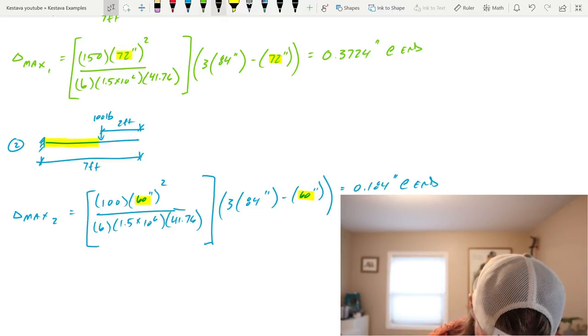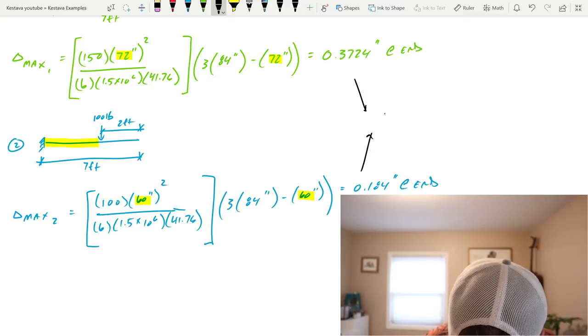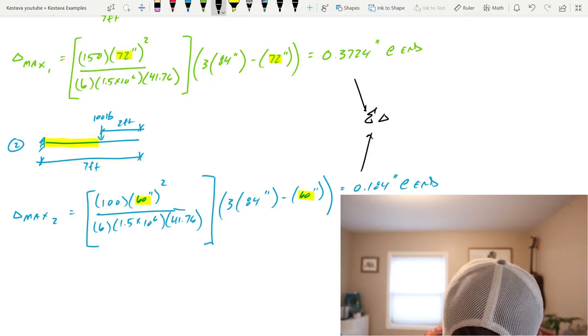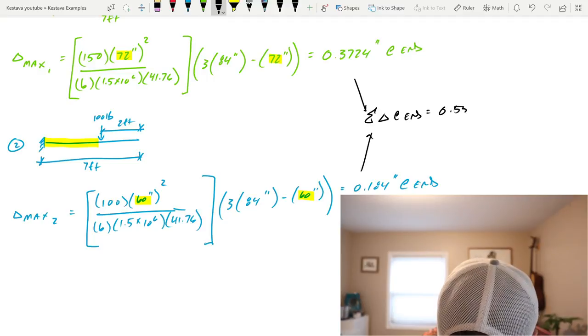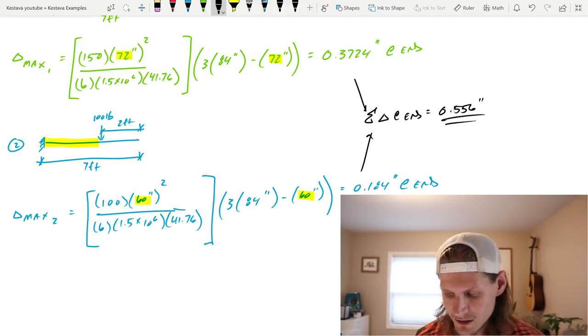We take, I'll go black, the summation of both of those. So summation deflection at end equals both those added together, which is 0.556 inches. I call that my final answer. Don't go anywhere. Let's go figure it out. Obey the YouTube algorithm. Stick around.